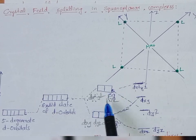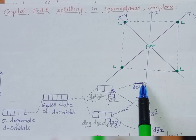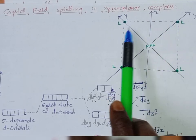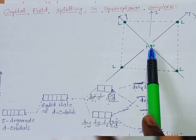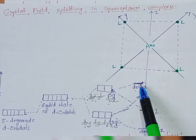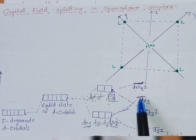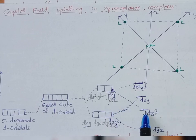From the EG set, dx²-y² orbital will get the highest energy level, because the four ligands are approaching the metal ion along the xy axis. Therefore, there is close interaction between dx²-y² orbital and the ligand orbital, resulting in more repulsion and higher energy. From the T2G set, dxy orbital will get the next highest energy level, followed by dz², and then dxz and dyz orbitals will occupy the lowest energy level.